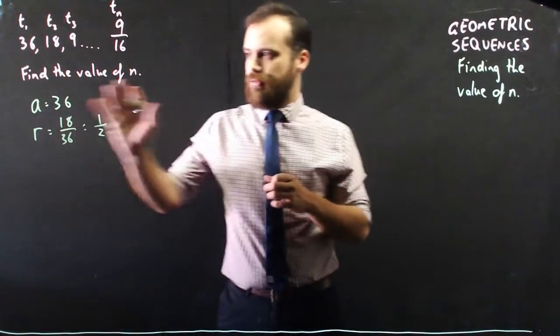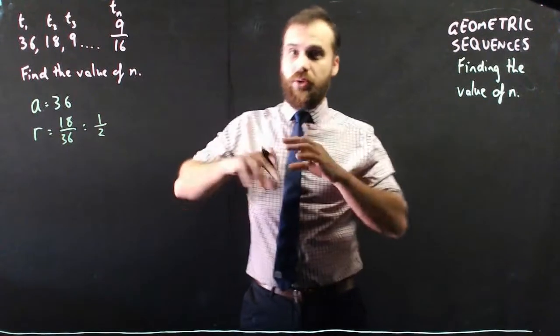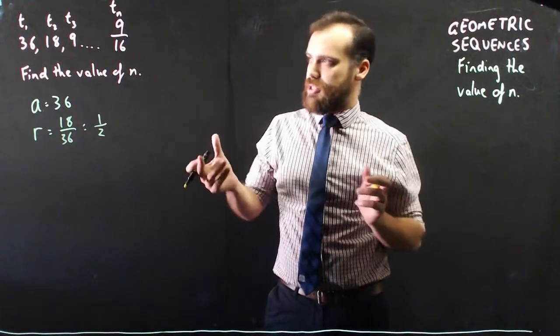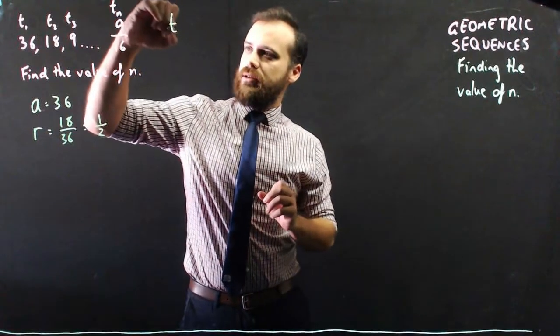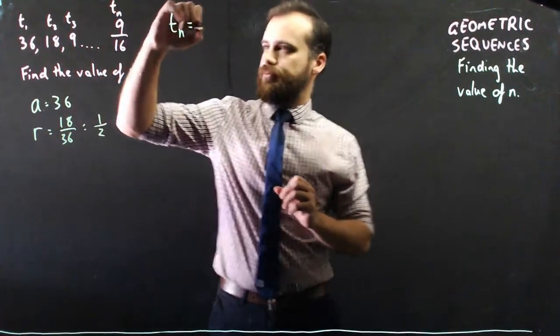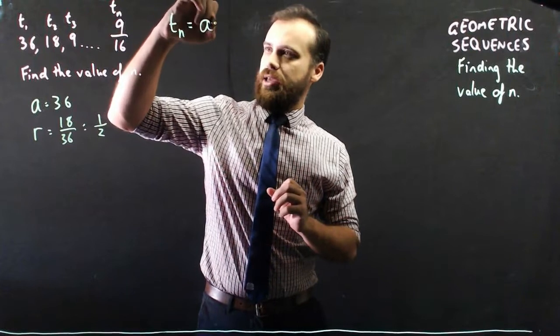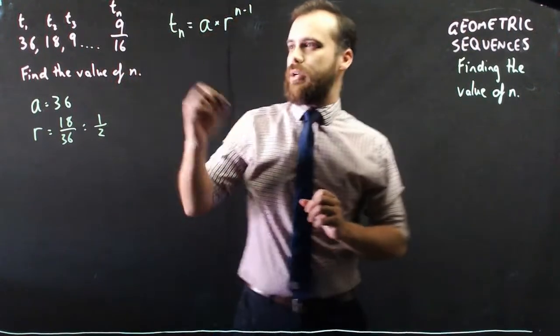Alright, so as long as we know the first term and the common ratio, we know everything there is to know about the geometric sequence. Formula: Term n is equal to a times r to the n minus 1.